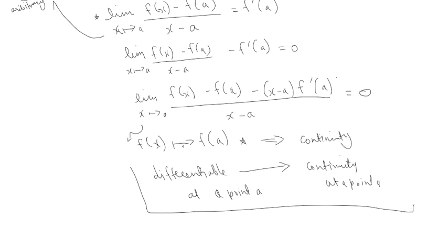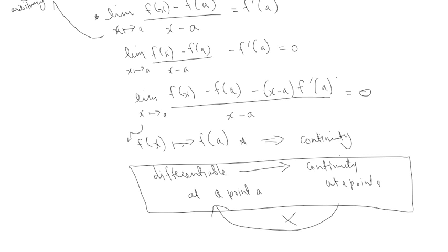This is a very important rule and it's often misused. People tend to use it in the wrong direction — if they establish that a function is continuous, they try to establish that it's differentiable, which is completely false. A function may be continuous but may not be differentiable. But if a function is differentiable, it will have to be continuous. Let's do an example to illustrate exactly that.